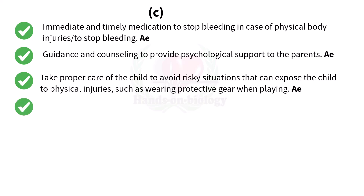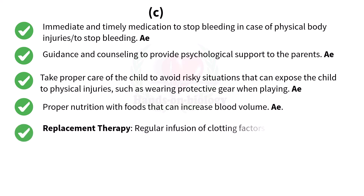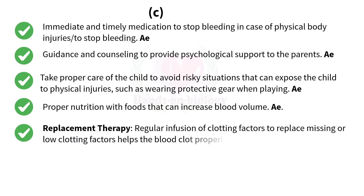For example, using protective gear when playing. Proper nutrition with foods that can increase blood volume. Replacement therapy: regular infusion of clotting factors to replace missing or low clotting factors, which helps the blood clot properly and prevents spontaneous bleeding.